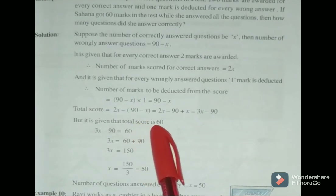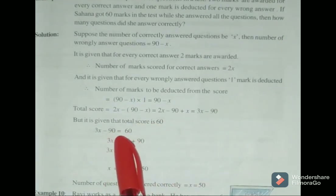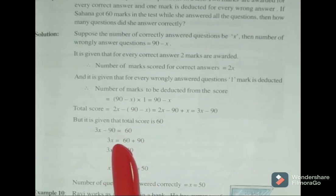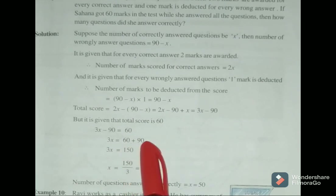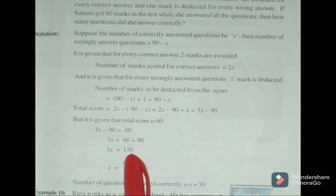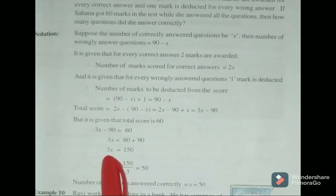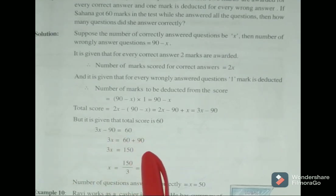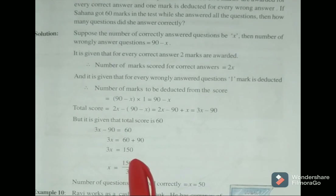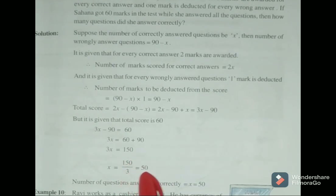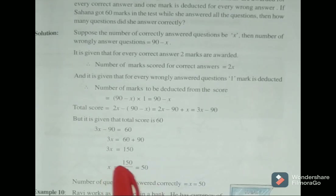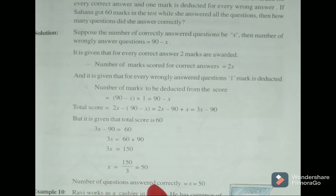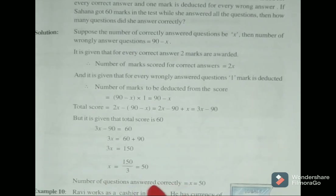It is given that the total score is 60, so 3X minus 90 equals 60. Transposing 90 to RHS gives 3X equals 60 plus 90, which is 150. X is multiplied by 3, so transposing 3 to RHS gives X equals 150 divided by 3, that is equal to 50. X is the number of questions answered correctly, so the number of correctly answered questions is 50.